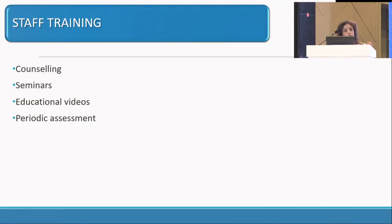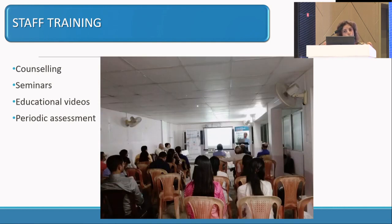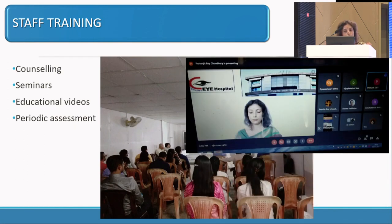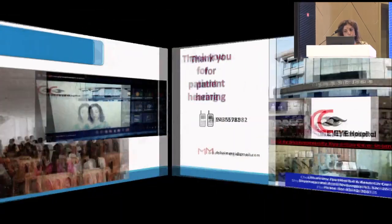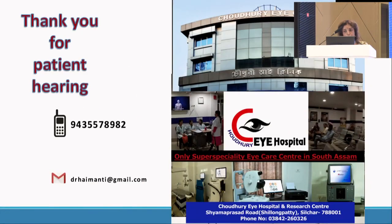Something about staff training — we need to train our staff over and over again, maybe once every three months or once every six months, about OT sterilization through counseling, seminars, and educational videos if necessary. We also need to periodically assess how well they are doing. As Dr. Mathur mentioned, those checklists should be maintained. Thank you very much for your patient hearing.